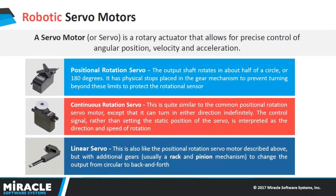A servo motor is a closed-loop servo mechanism that uses position feedback to control its motion and final position. Two inputs control a signal command. Like the servo motor, we have PWM — pulse width modulation — which is the process of turning on and off digital voltage quickly to simulate a range of voltage. The heart of the servo is a small direct current motor.